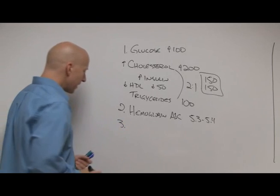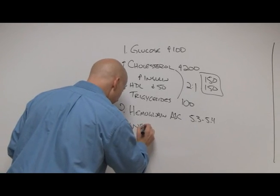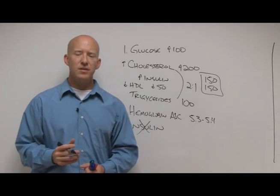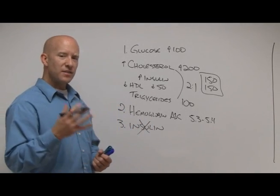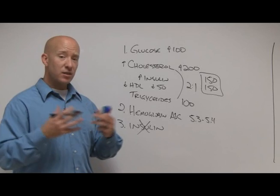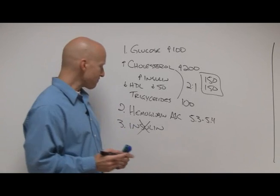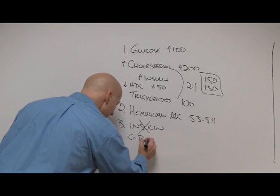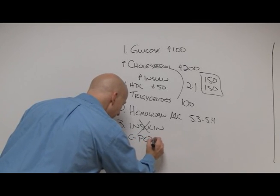Now, here's the problem. Insulin is not a good marker. Insulin is a hormone made by your pancreas that has a very short half-life, meaning it gets cleared out of your body relatively quickly. However, at the same time that your pancreas is making insulin, it's making something else called C-peptide.